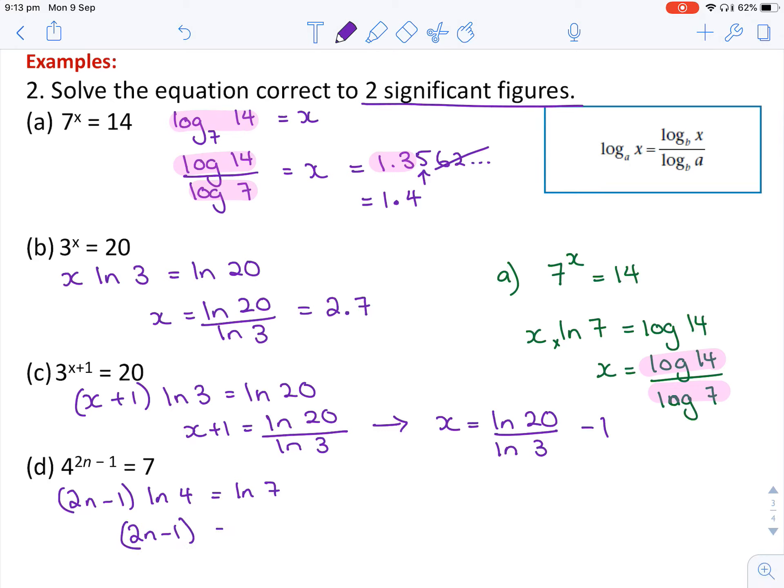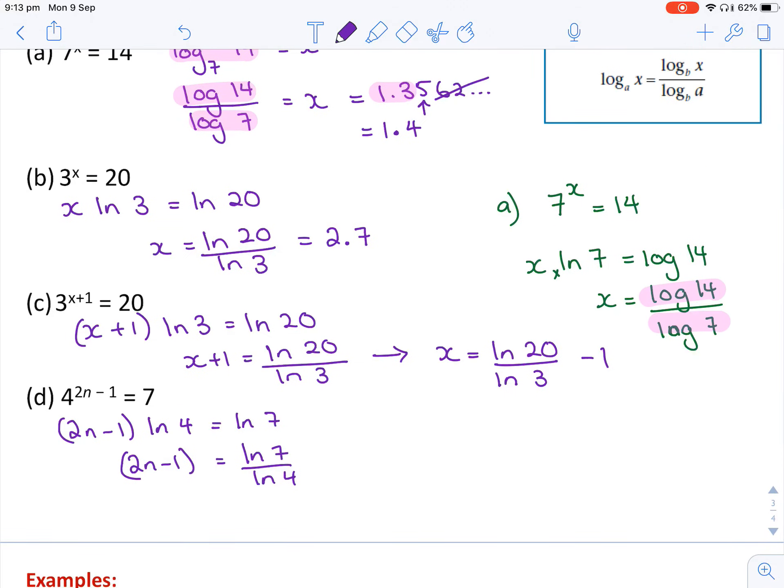So we end up with 2n equals log 7 over log 4. And then the very last step is to divide through whatever answer you have, because here that's being multiplied by the 2.